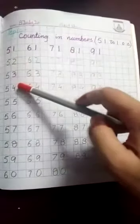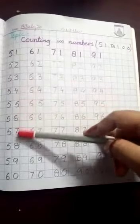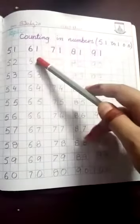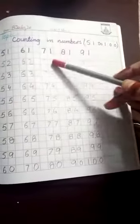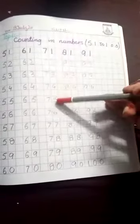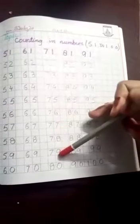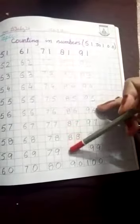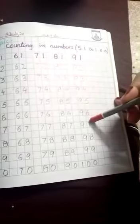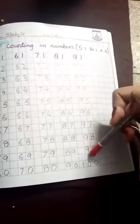51, 52, 53, 54, 55, 56, 57, 58, 59, 60, 61, 62, 63, 64, 65, 66, 67, 68, 69, 70, 71, 72, 73, 74, 75, 76, 77, 78, 79, 80, 81, 82, 83, 84, 85, 86, 87, 88, 89, 90, 91, 92, 93, 94, 95, 96, 97, 98, 99, 100.